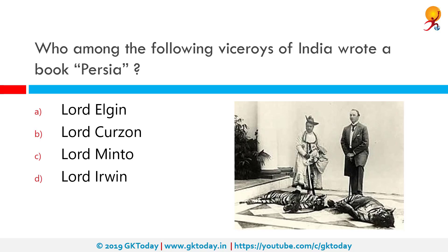Which among the following Viceroys of India wrote the book Persia? That would be Lord Curzon. Lord Curzon served as Governor General and Viceroy of India from 6 January 1899 to 18 November 1905. His policies resulted in deep discontent and the upsurge of a revolutionary movement, making him one of the most unpopular Viceroys of India.